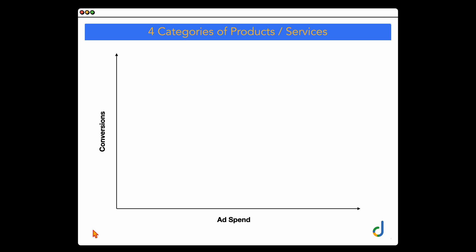That's a perfect opportunity to break out those low-spending products or services into their own separate Google Ads campaigns so that you're manually forcing Google to spend more on those products. Let's jump into a screen share — I want to visually show you how you can categorize four different products or services. We've got four different categories plotted on axes: along the bottom axis we have ad spend going from low to high, and on the vertical axis we have conversions going from low to high.